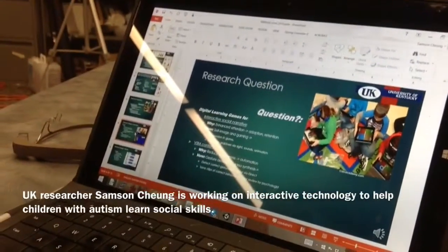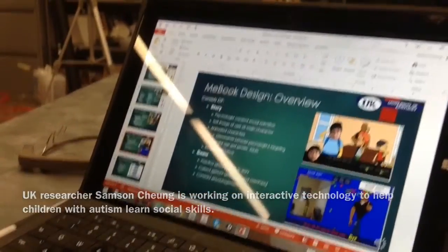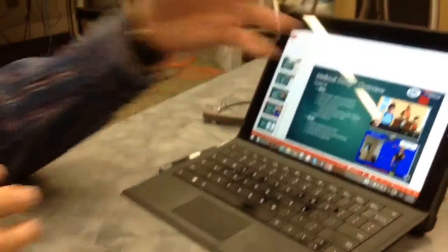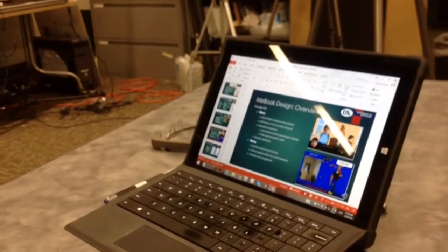So, this is the overall overview of the MeBook design. Basically, you have three basic components.